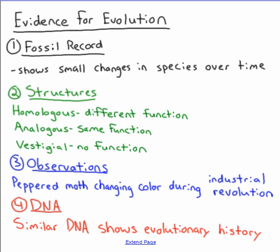Our tailbone and the inability to move our ears are remnants of our evolutionary history. Observations are another form of evidence — the best example being the peppered moth. The peppered moth changed color from white to black in response to the industrial revolution, and when the atmosphere was cleaned up, it changed back from black to white, showing evolution in a very short time period.